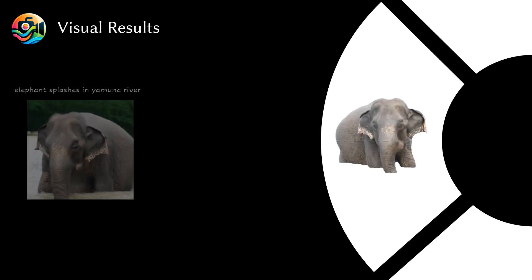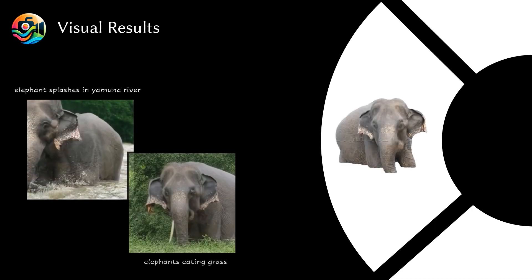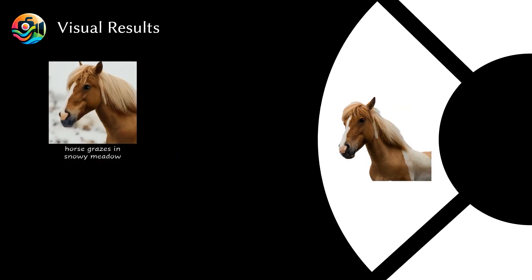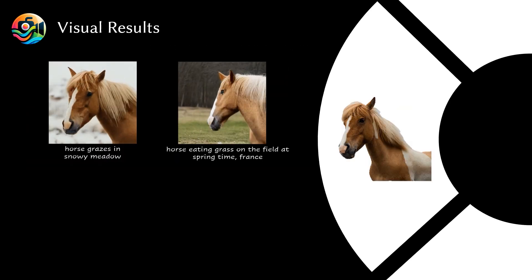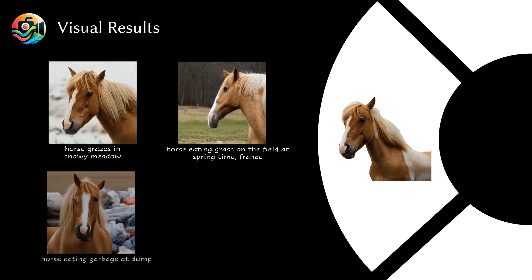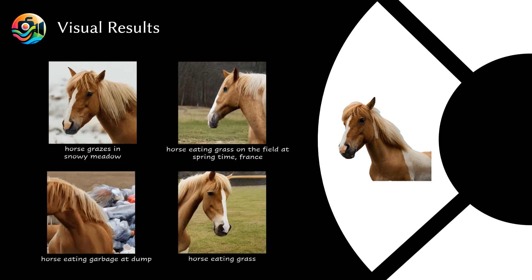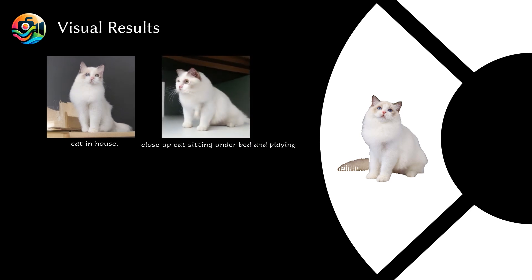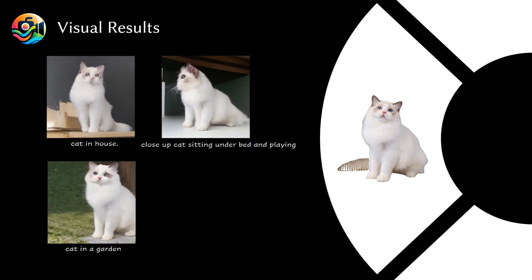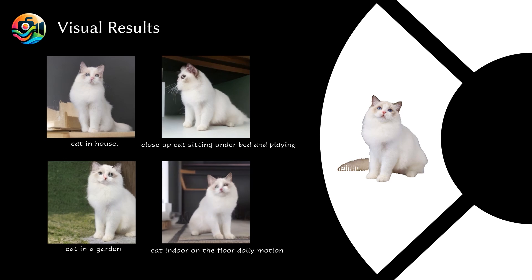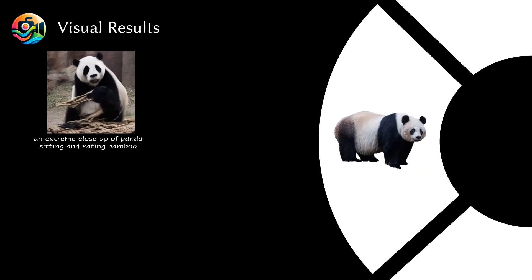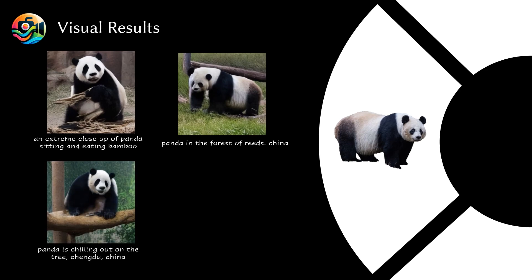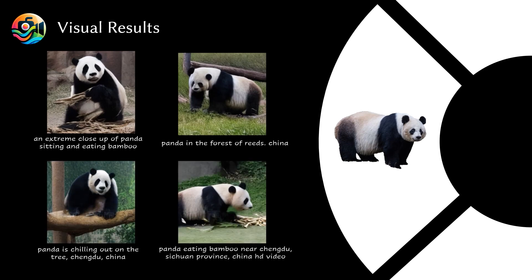One interesting aspect is the potential application to human models. While the research primarily showcases animals, it opens up the question of whether the same technology can be applied to humans. Imagine uploading your photo and then generating various scenes with a consistent portrayal of yourself. This research represents a significant step forward in overcoming one of the major challenges — maintaining character consistency. It's about telling coherent stories where characters remain true to their original image no matter the setting.